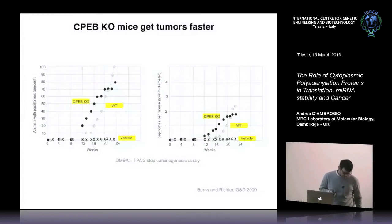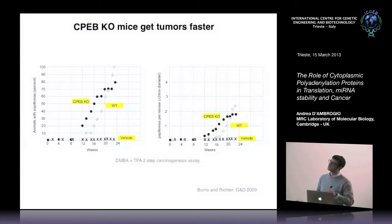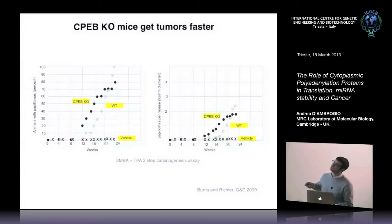Interestingly, when we do a two-step carcinogenesis assay putting two chemicals on the skin of mice, you can see that if the mice are knockout for CPEB, they get tumors faster and develop more tumors.